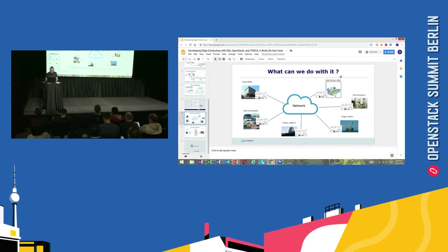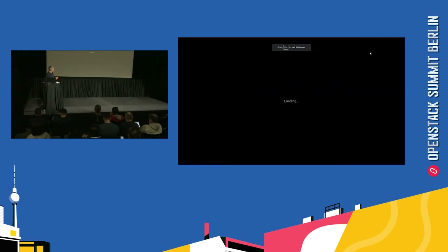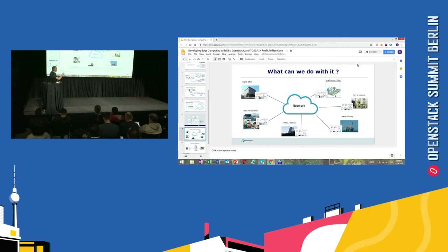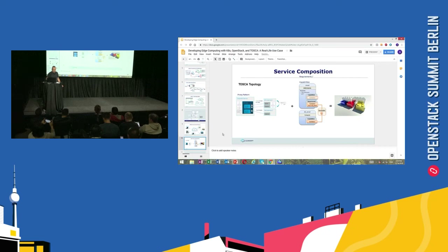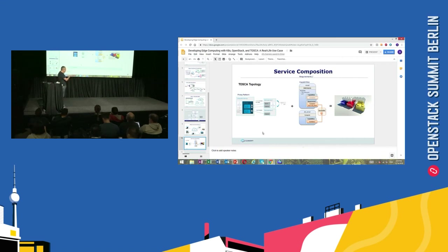There are many use cases — this is only one example. You have smart cities, transportation, defense, energy, and so on. Everything here was achieved using a TOSCA model. In TOSCA it's very easy to define a topology and microservices — a node can be contained in another node, a node can be connected to another node, and you can define different services in different blueprints. There is a master blueprint that can connect everything.